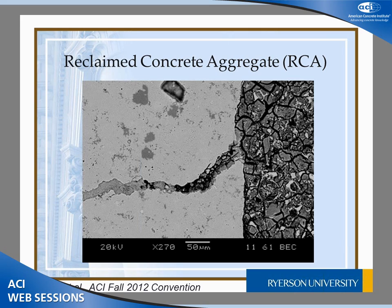If we go inside the particle, that's what you will see — in this case, that's an affected aggregate. This particular aggregate comes from a 13-year-old test block that was built as an experiment with reactive aggregate. After 13 years, the expansion exceeded the limit, with observed multiple cracking. So the RCA particle will have these components: the original stone and the residual mortar, and you can also see a crack formed due to alkali-silica reaction.